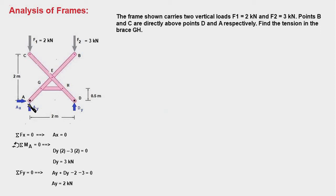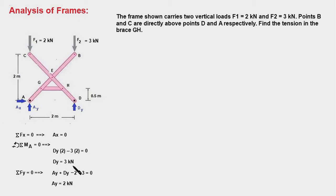We have three equilibrium equations. Sigma FX = 0 gives AX = 0, since there are no horizontal forces. Taking moments about point A, forces AX, AY, and F1 are eliminated — F1 passes through point A since C is directly above A. Only DY and F2 contribute, each with a moment arm of 2 meters. This gives DY = 3 kN. Then sigma FY = 0 gives AY = 2 kN.